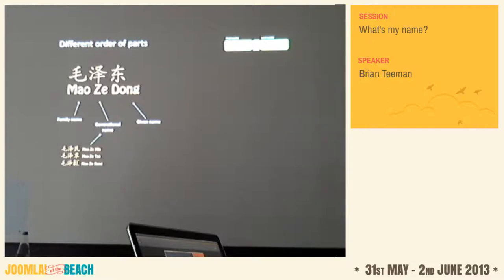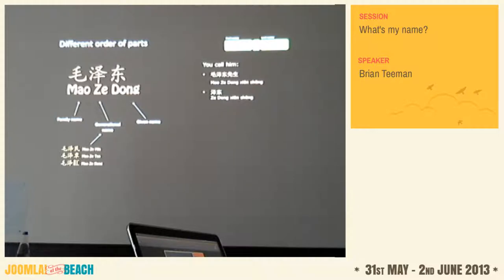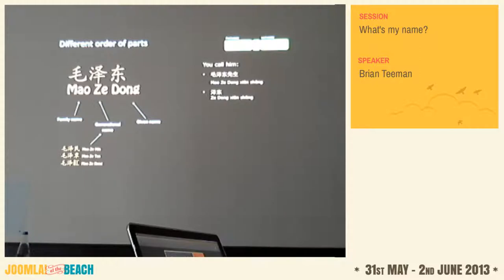What do you call Mao Zedong? You either call him Mao Zedong Xiansheng — the polite form — or just Zedong Xiansheng. The generational name, the middle bit, is always there. So even though it's not part of the family name, it's always present. Look at the form box: first name, middle bit, last name. If someone puts Zed in the middle field, it might get missed — but it's an important part of his name.